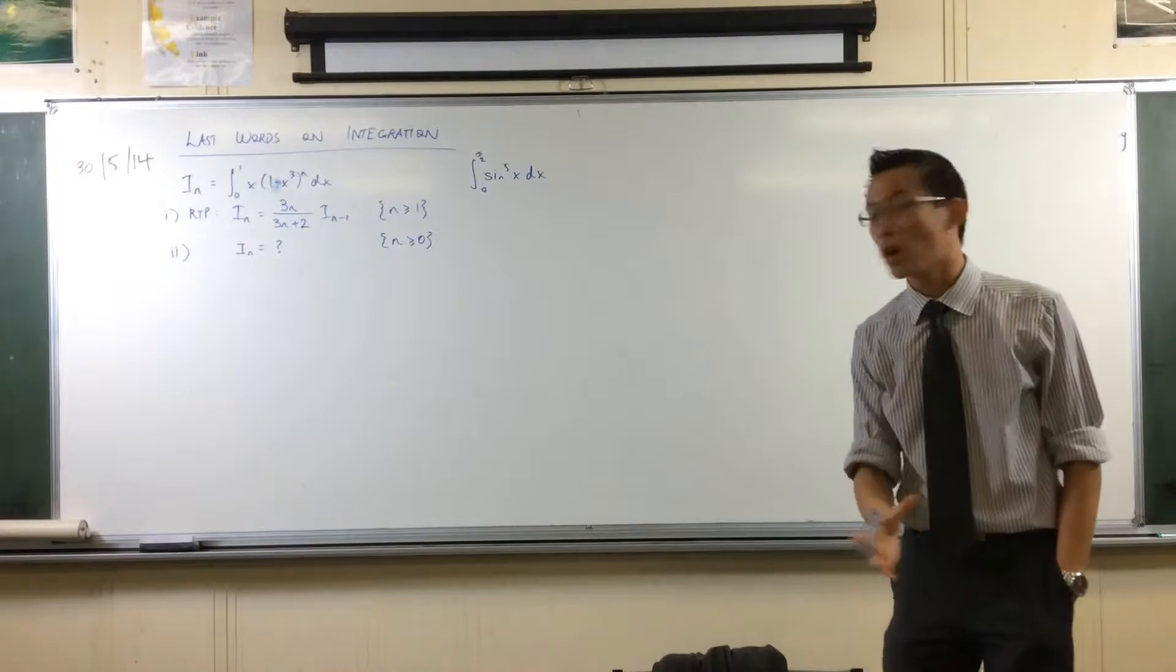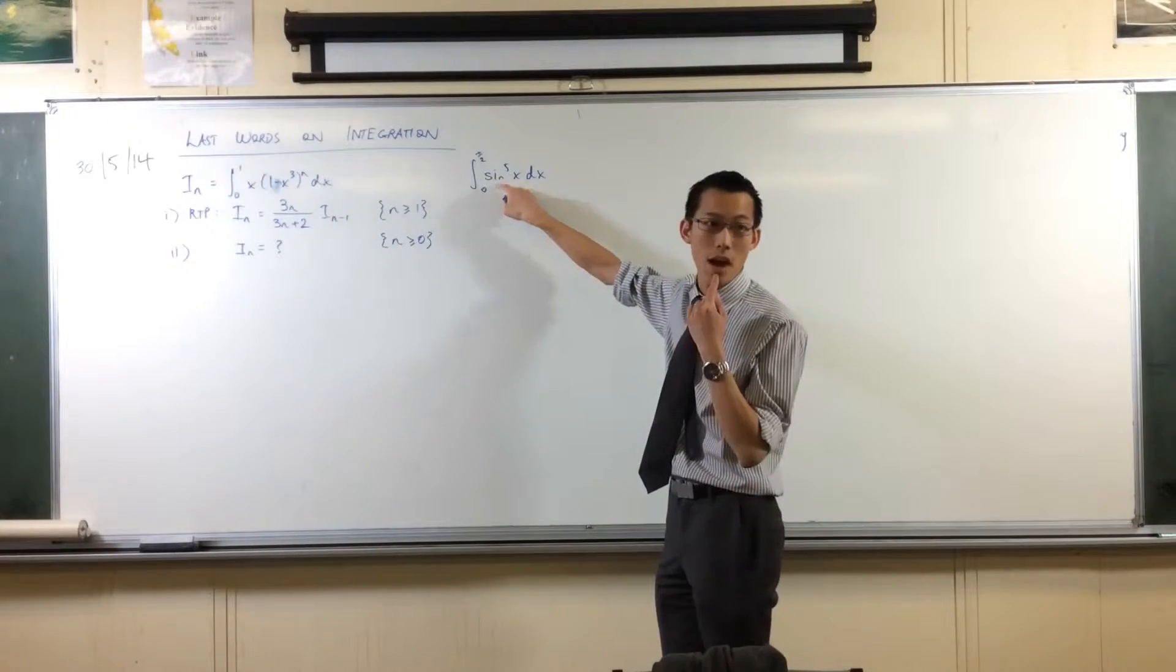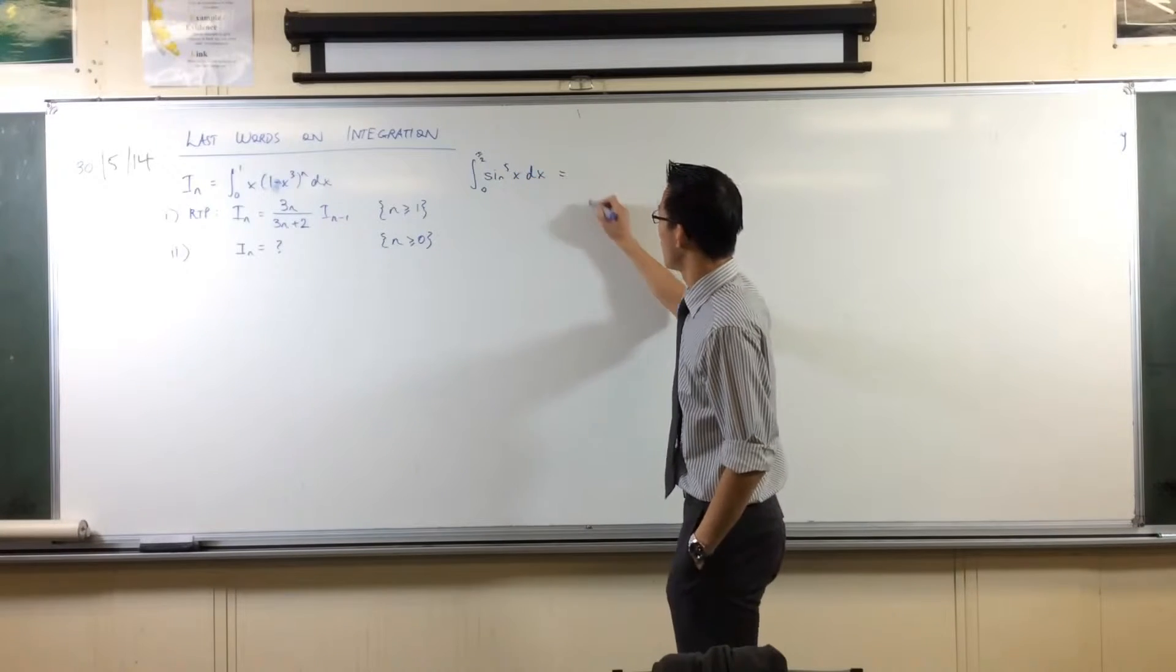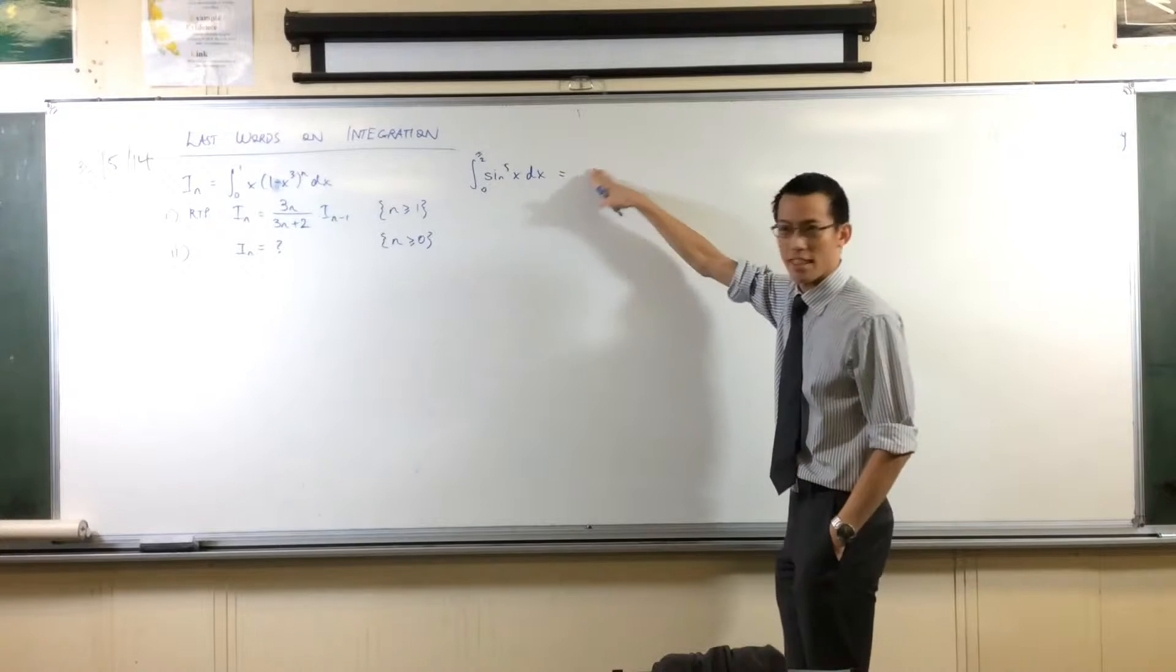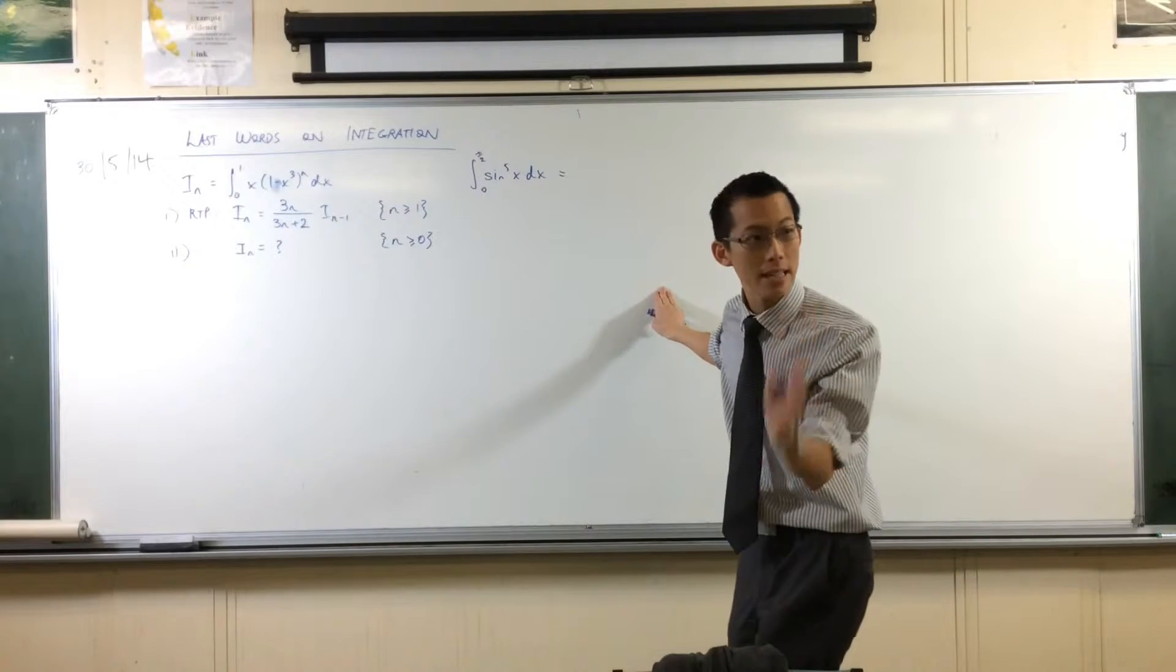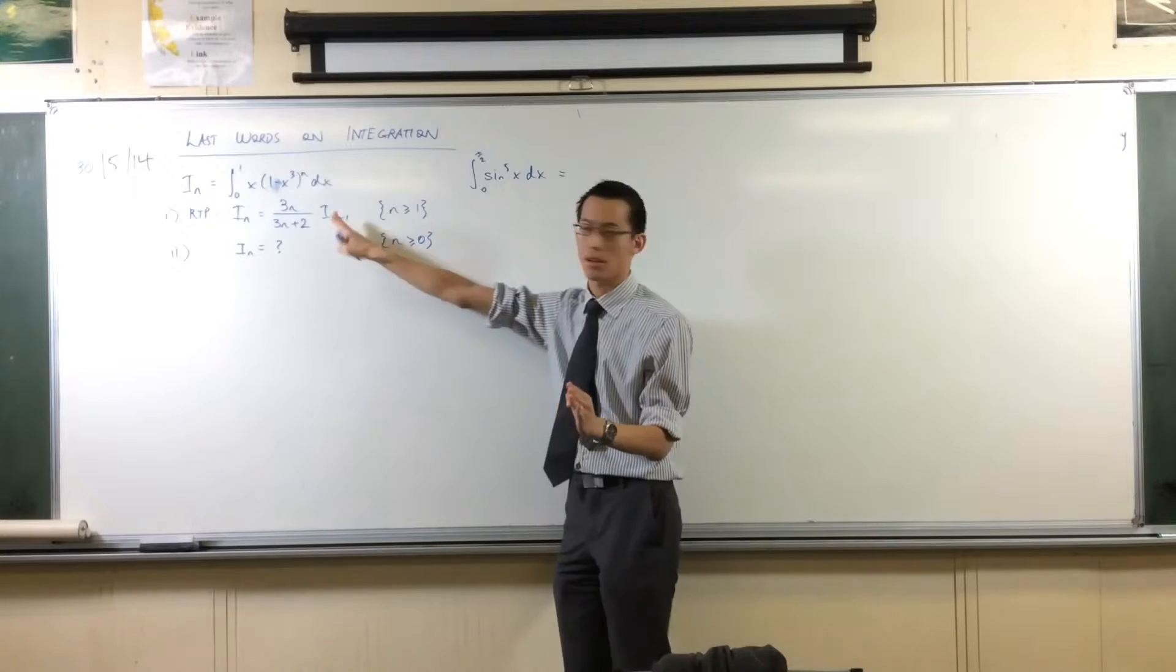What we did was, we saw that if we took the case of sine x all to the n, you can get your recurrence relation. If we call this I_5, then there'd be an I_4 in it, and then an I_3, and an I_2, and an I_1.